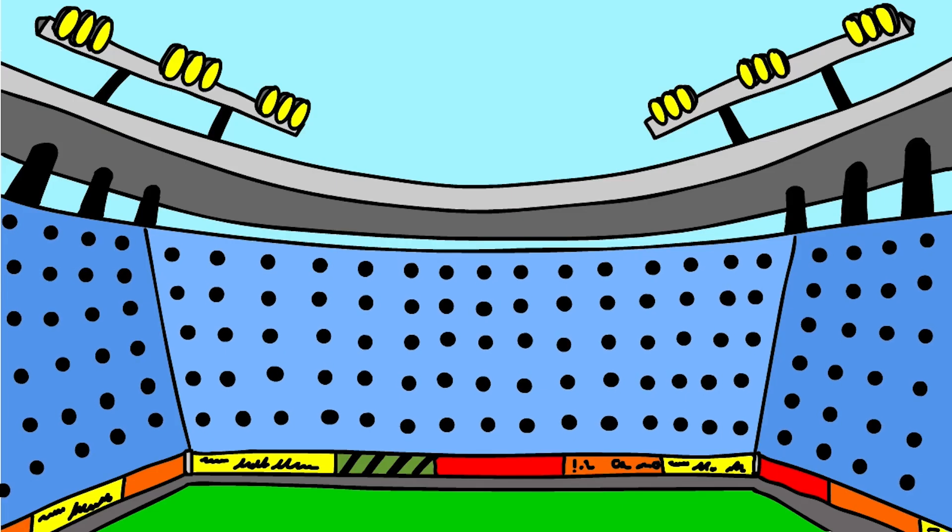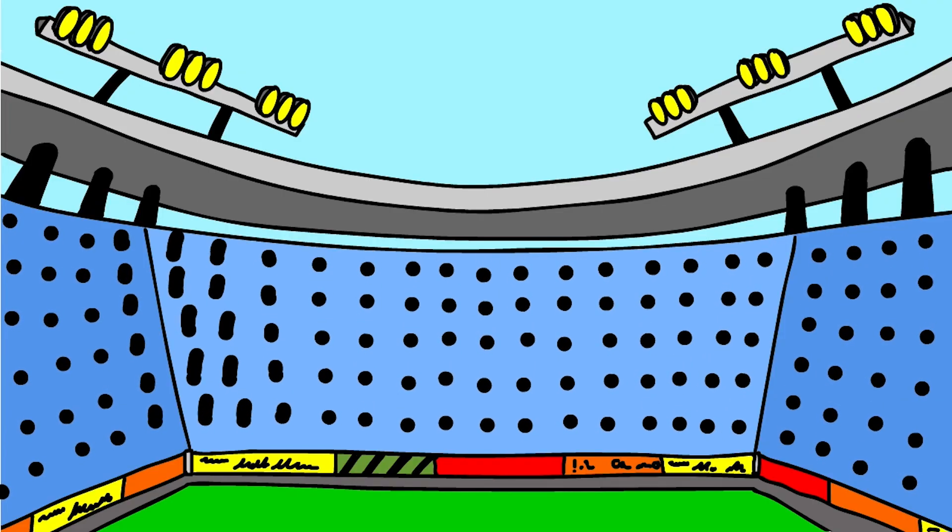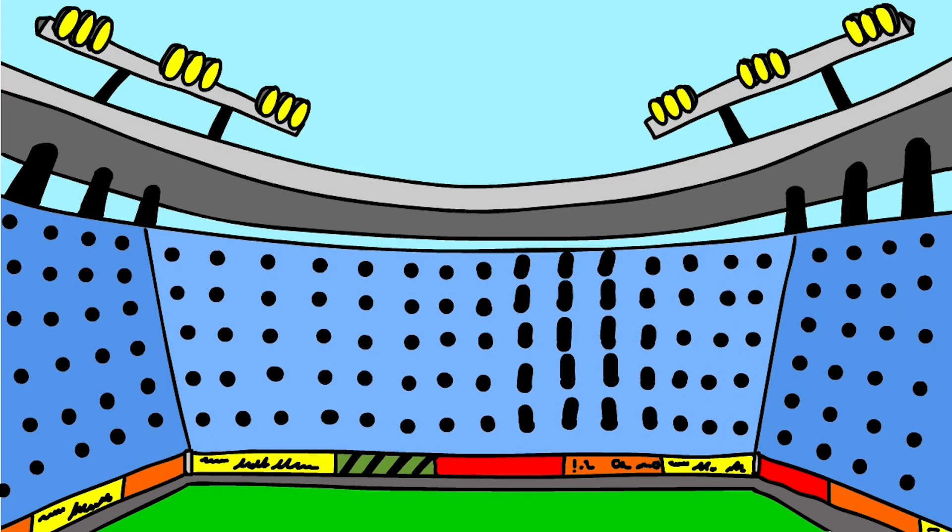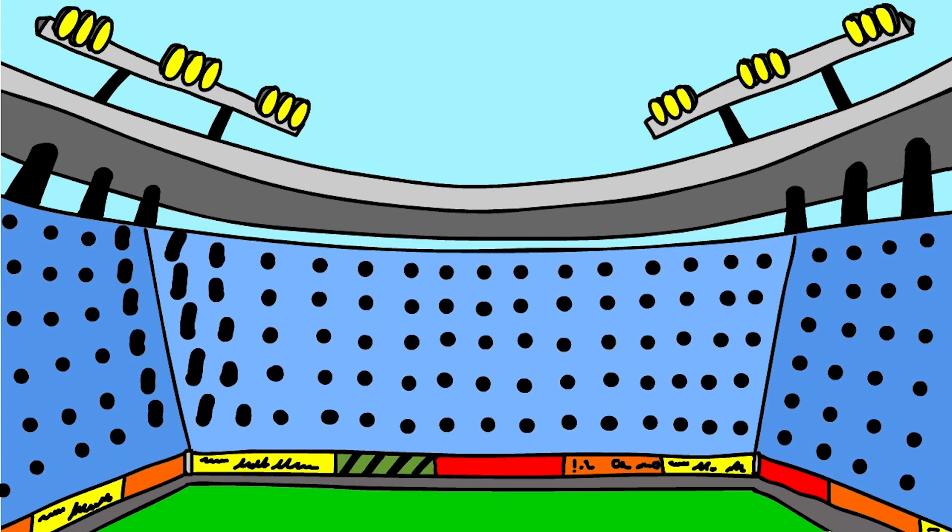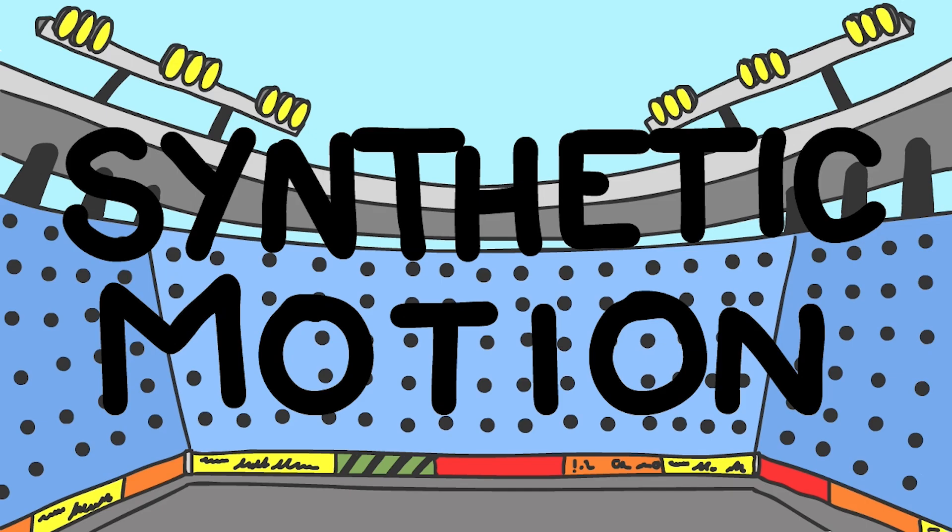This illusion of motion also occurs in a Mexican wave at a stadium. Although the fans don't move from right to left, the coordination of many fans makes it look like a wave is moving around the stadium. We call this illusion synthetic motion, and it was this idea of synthetic motion that got us thinking.